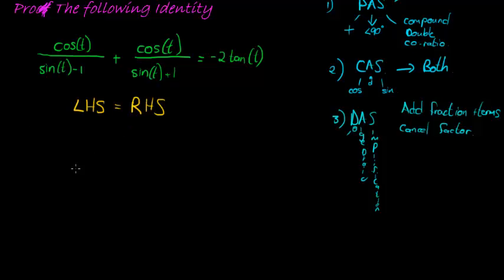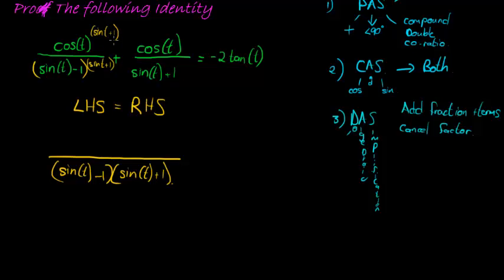Adding fractions, for example, is a very common theme in these, to be able to add your fractions. To add fractions, we need to first choose a common denominator. Our common denominator is sin t minus 1 as one factor, and sin t plus 1 as another factor. Now, in order to have done that, I need to multiply this with sin t plus 1, which means I must multiply the numerator with sin t plus 1. This one needs to be multiplied with sin t minus 1. Same with the numerator sin t minus 1.